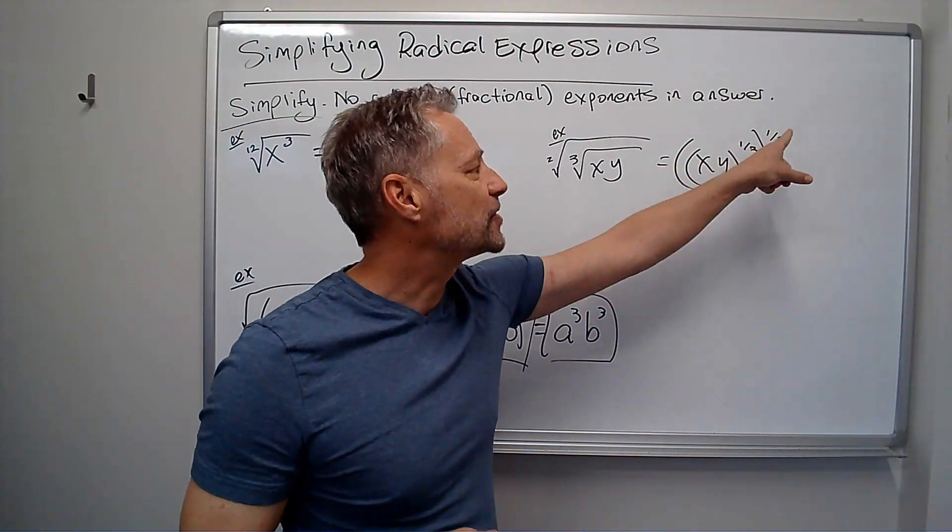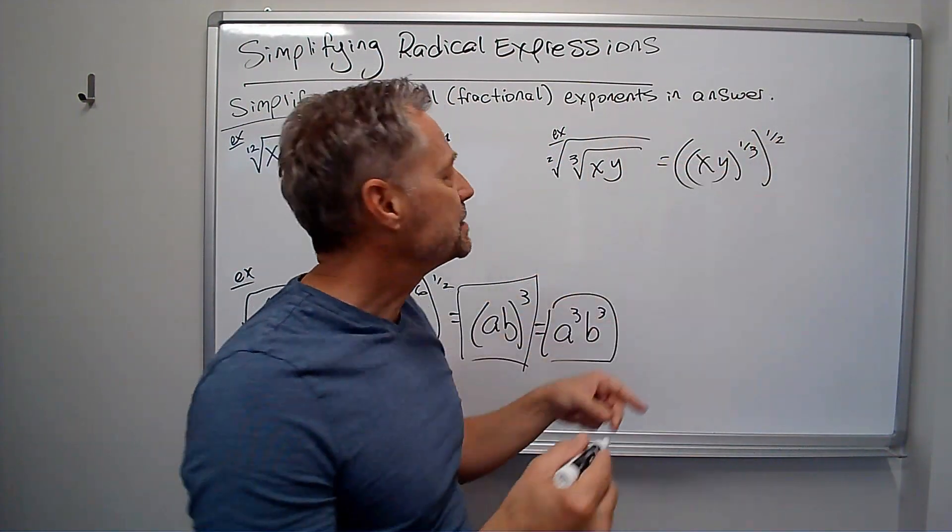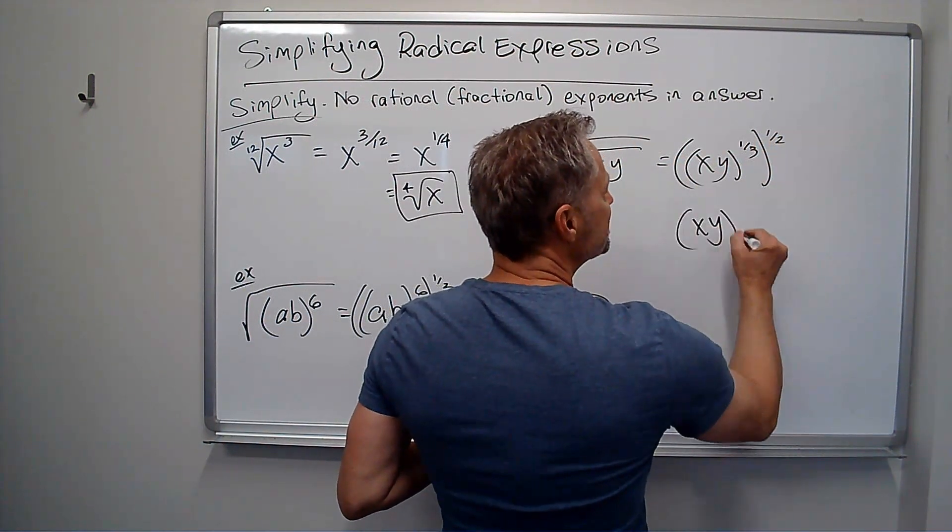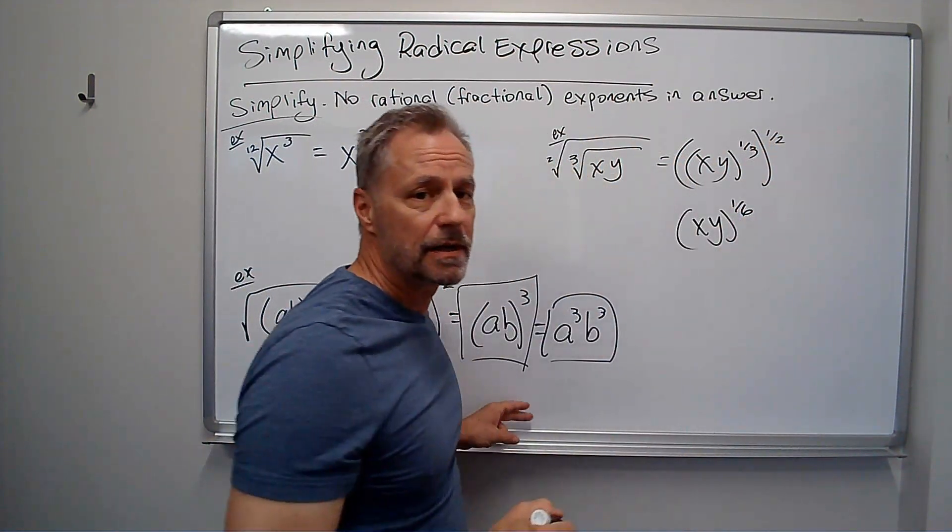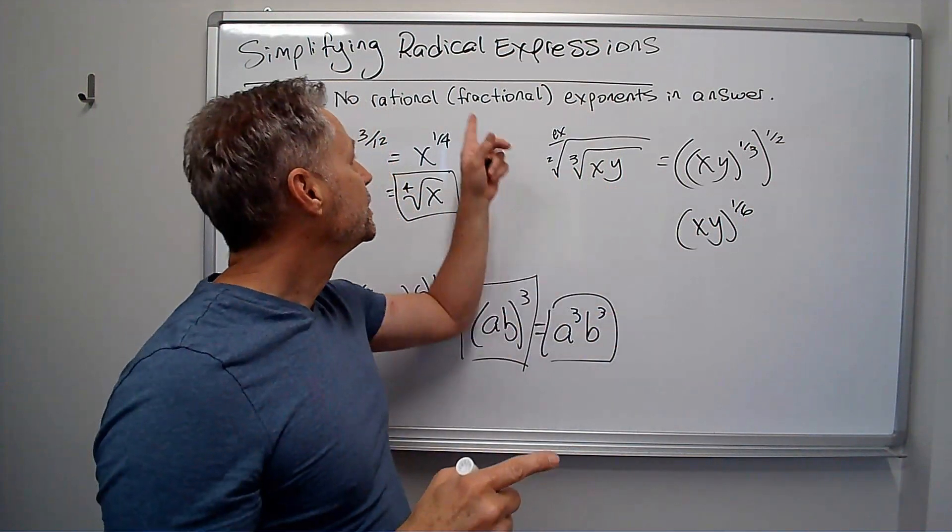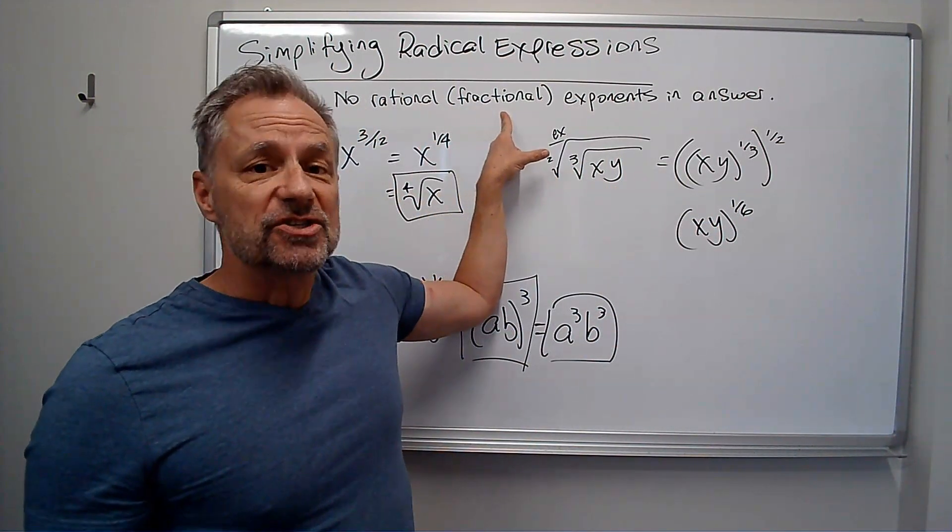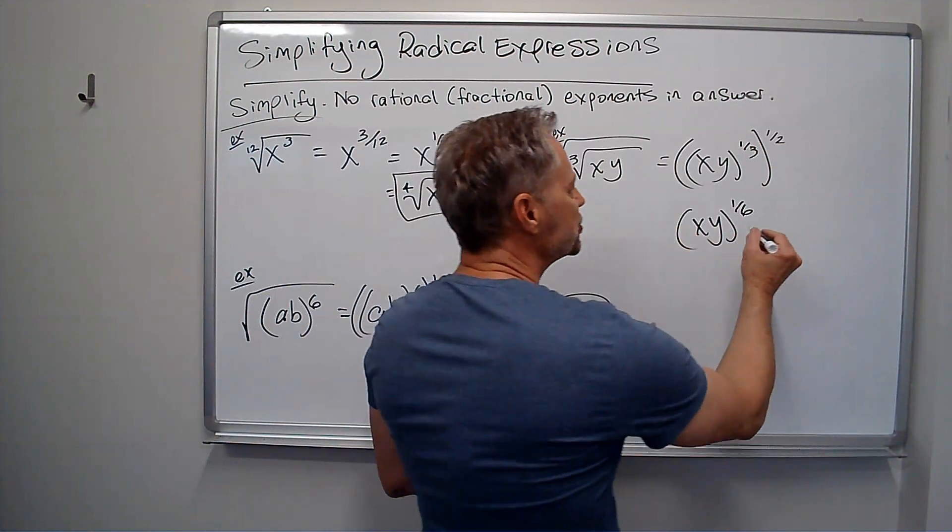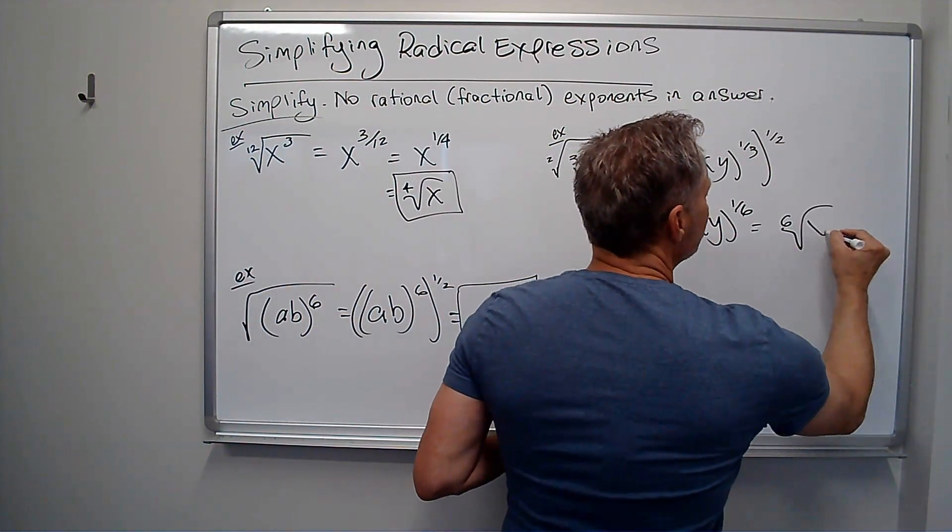So multiply straight across. One times one is one. Three times two is six. So this just becomes xy to the one-sixth power. And again, if they don't want fractions or rational exponents, then we just do the sixth root of xy.